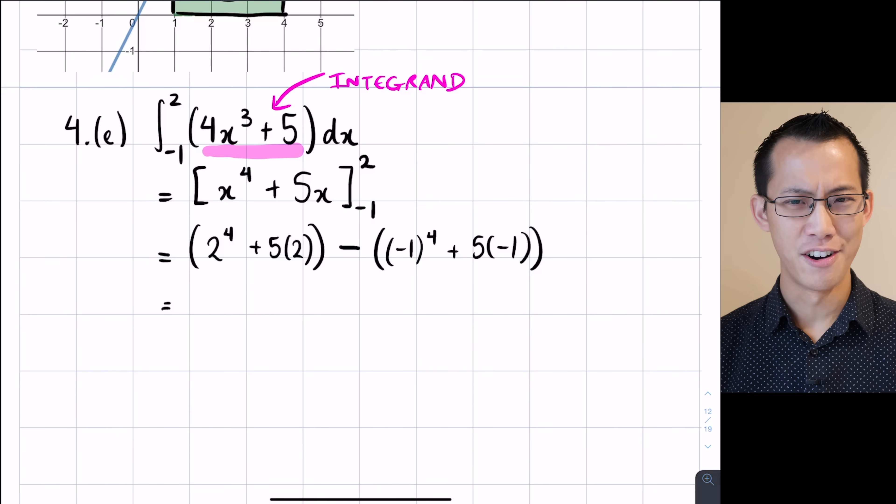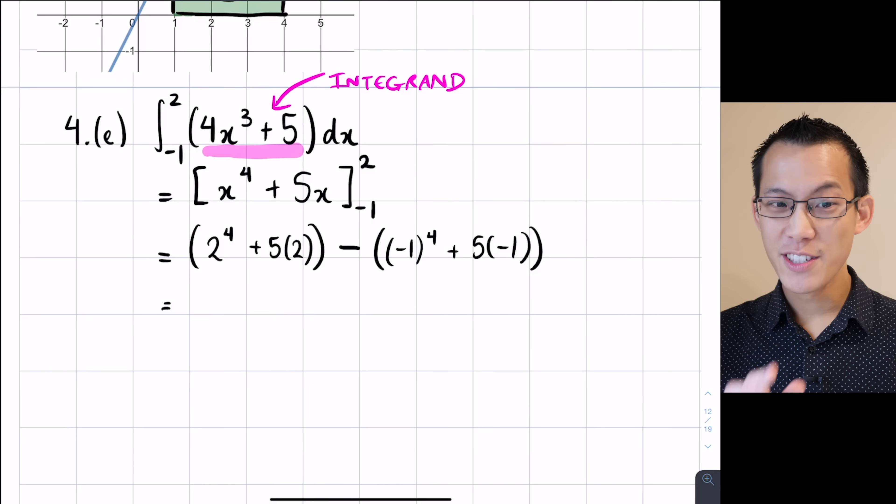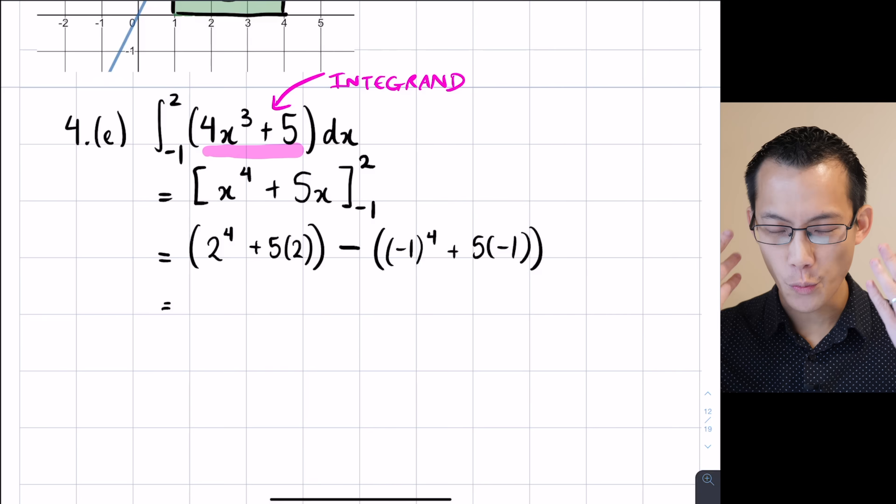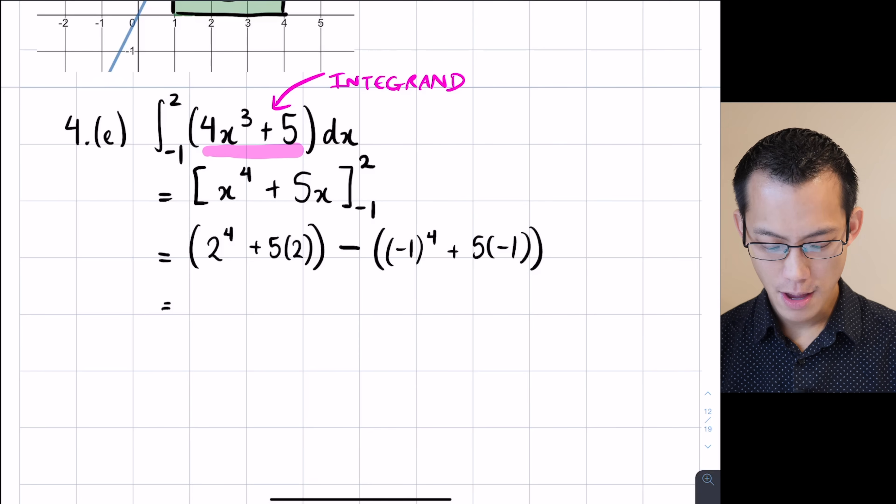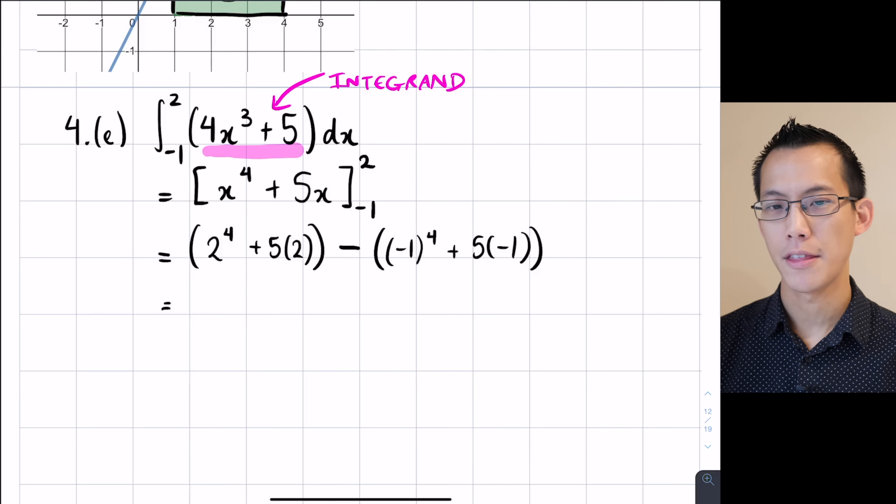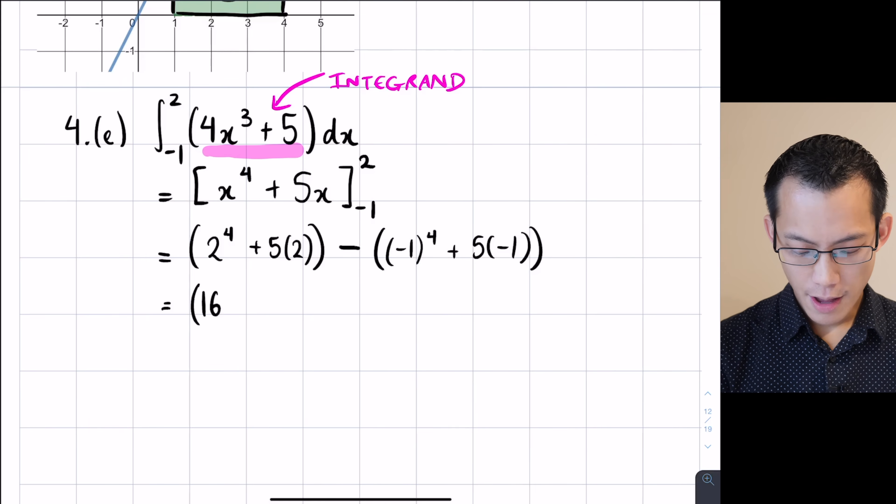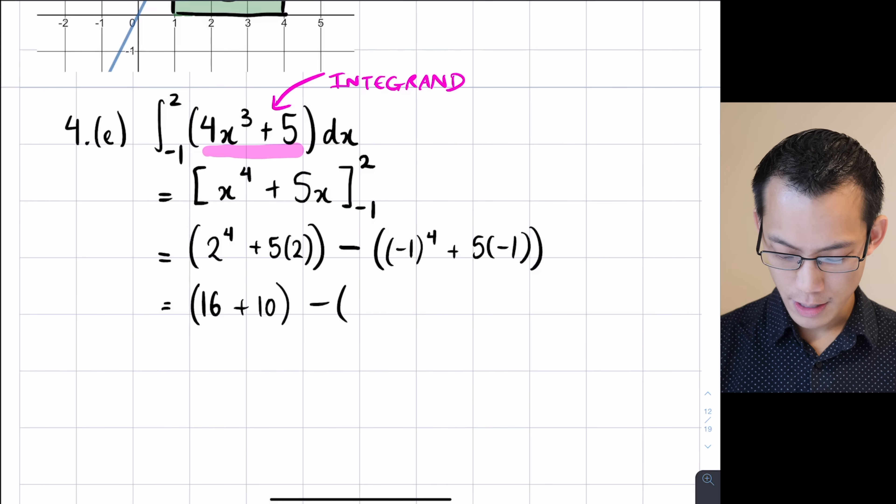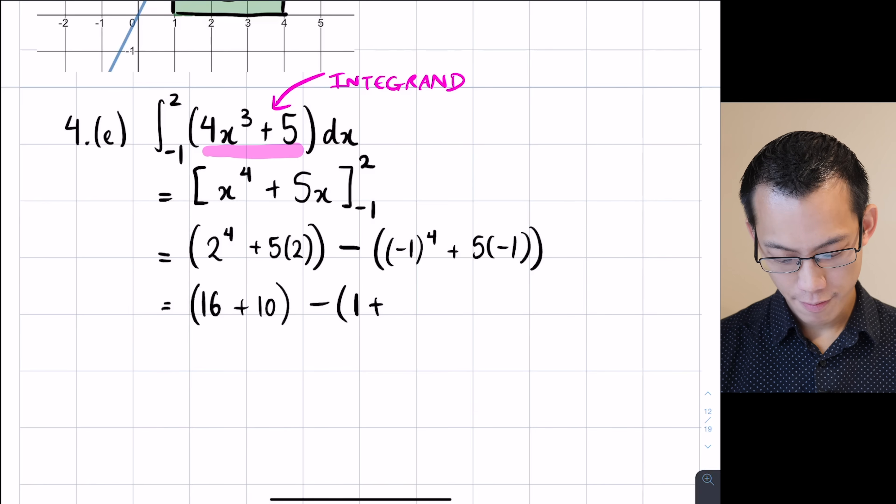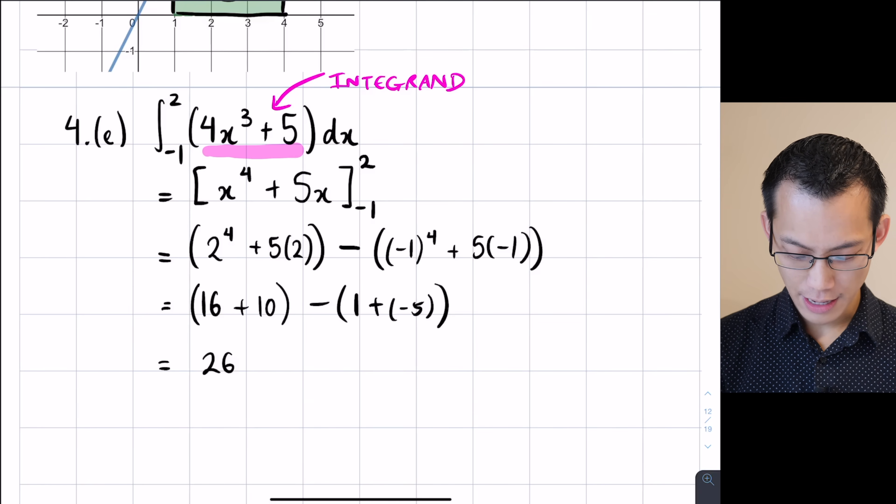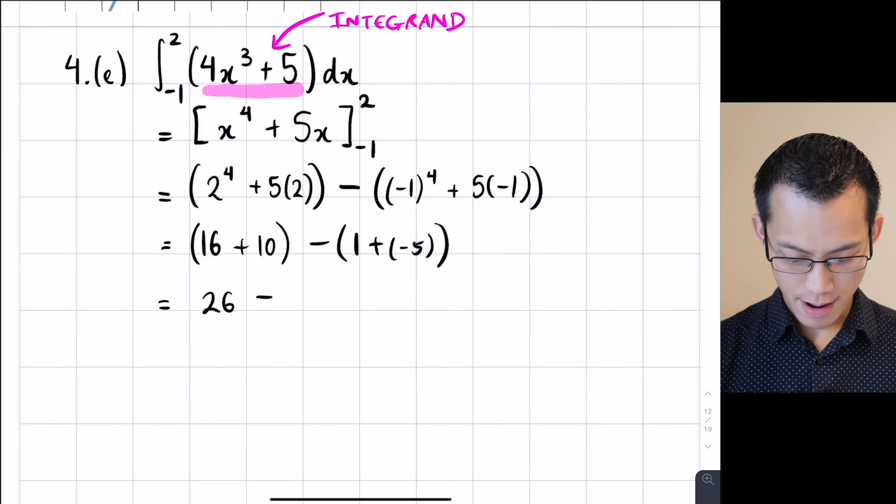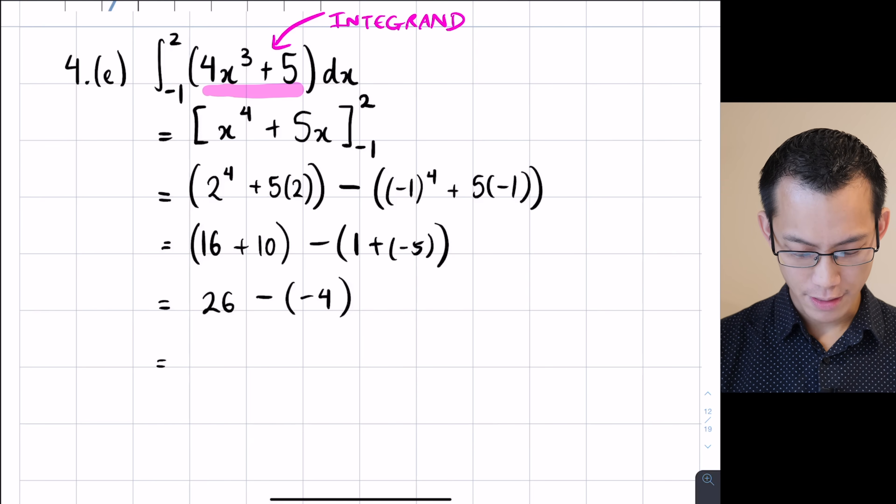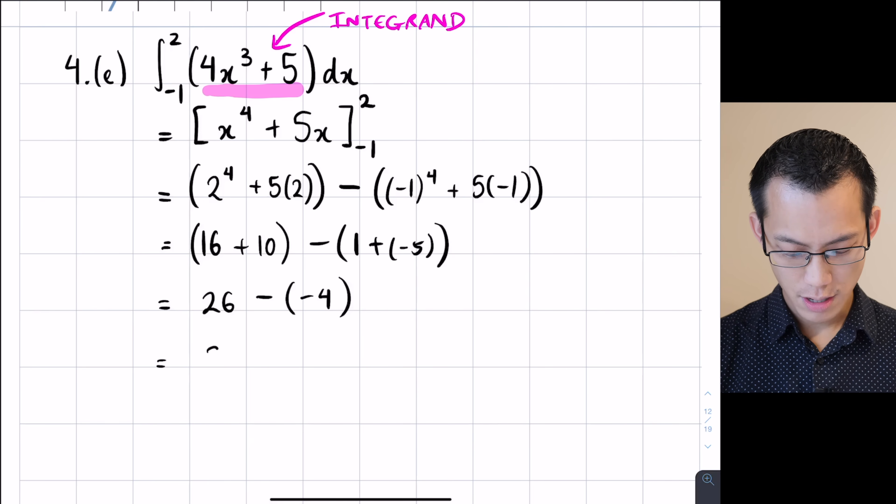And maybe some of you are already ahead of me and have actually evaluated this already. I encourage you, by the way, at this point, to not rely on your calculator. Come on, use your brain there. You'll be so much better at actually identifying problems and errors in your own working. So 2 to the 4 is 16. 5 lots of 2 is 10. I'm going to subtract. Negative 1 multiply by itself 4 lots, that's 1. And then I'm going to add negative 5. That gives me 26 on the left-hand side. I'm subtracting. Careful here. 1 plus negative 5, that's negative 4. And then when I have those double negatives, I'm going to get 26 plus 4, which is 30.